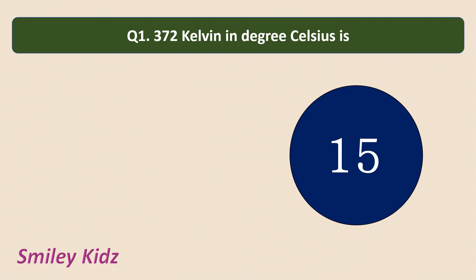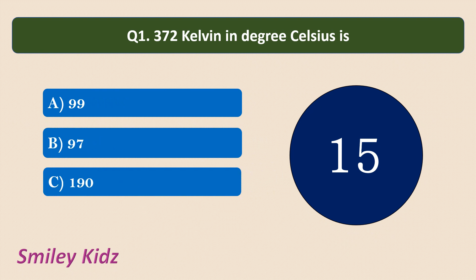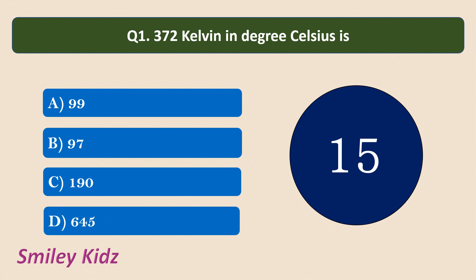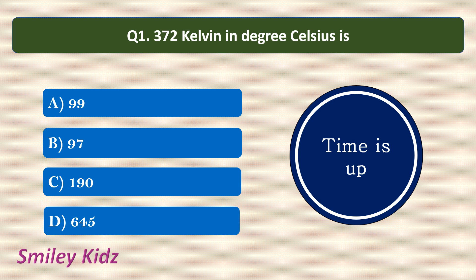Question number 1. 372 Kelvin in degree Celsius is? Your options are 99, 97, 190, or 645. Your time starts now. Your time is up and the correct answer is 99.